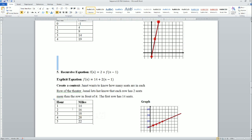Number five, it gives us the scenario: Janet wants to know how many seats are there in each row of the theater. Jamie, Janet, let her know that each row has two seats more than the row in front of it. The first row has 14. Very beautiful here—each row has two seats more than the row in front of it, and that would be your rate of change or your common difference, or your slope.